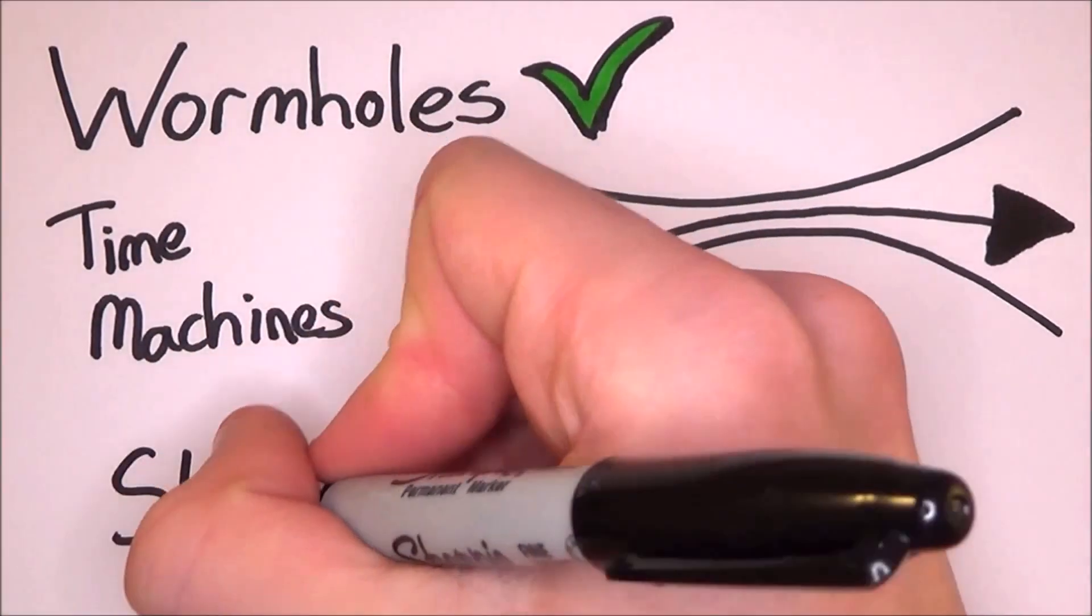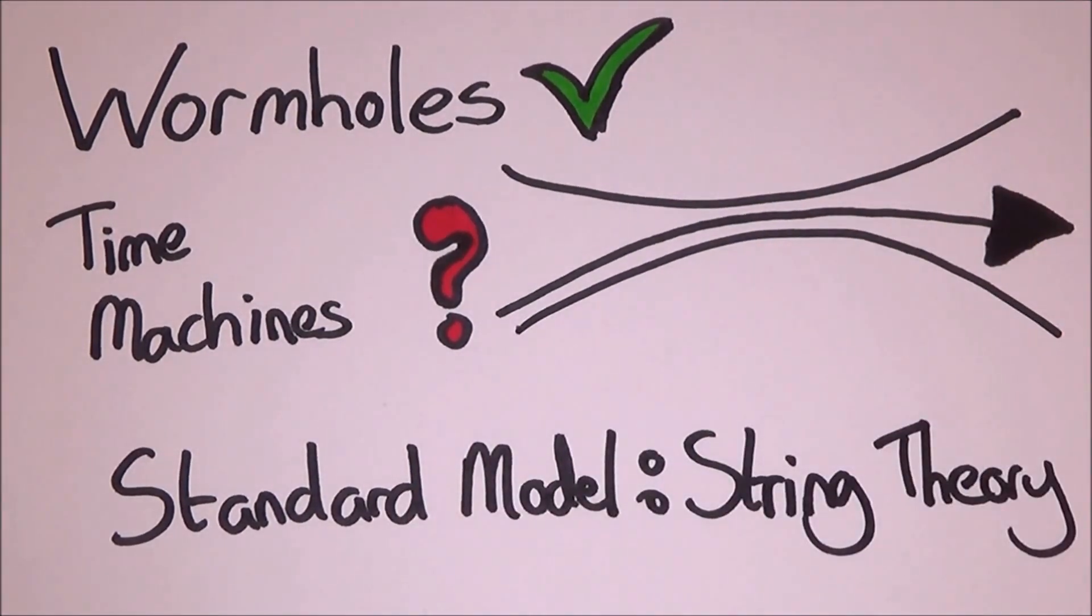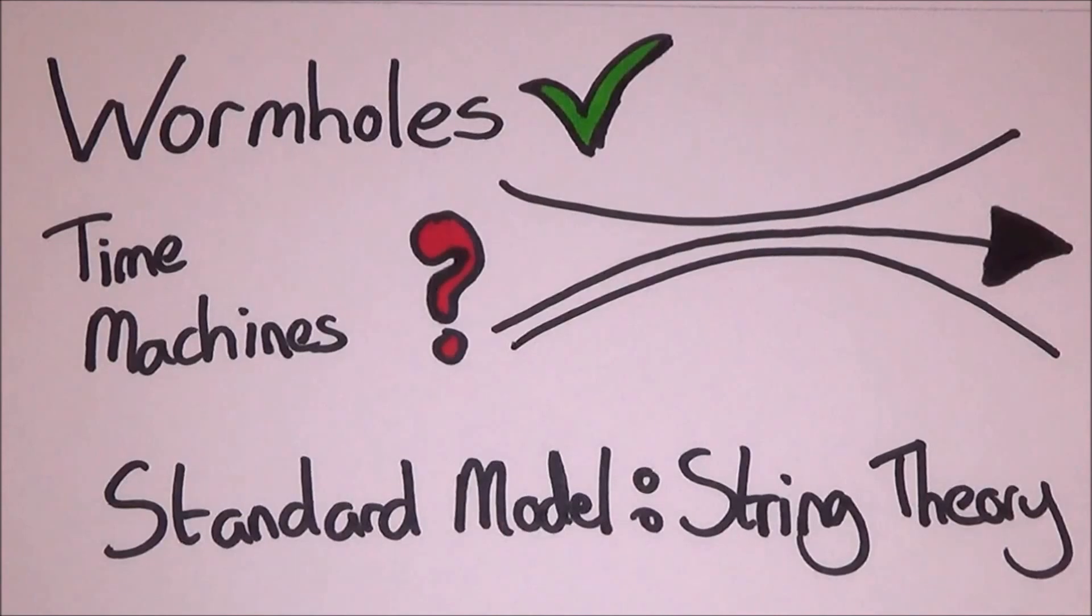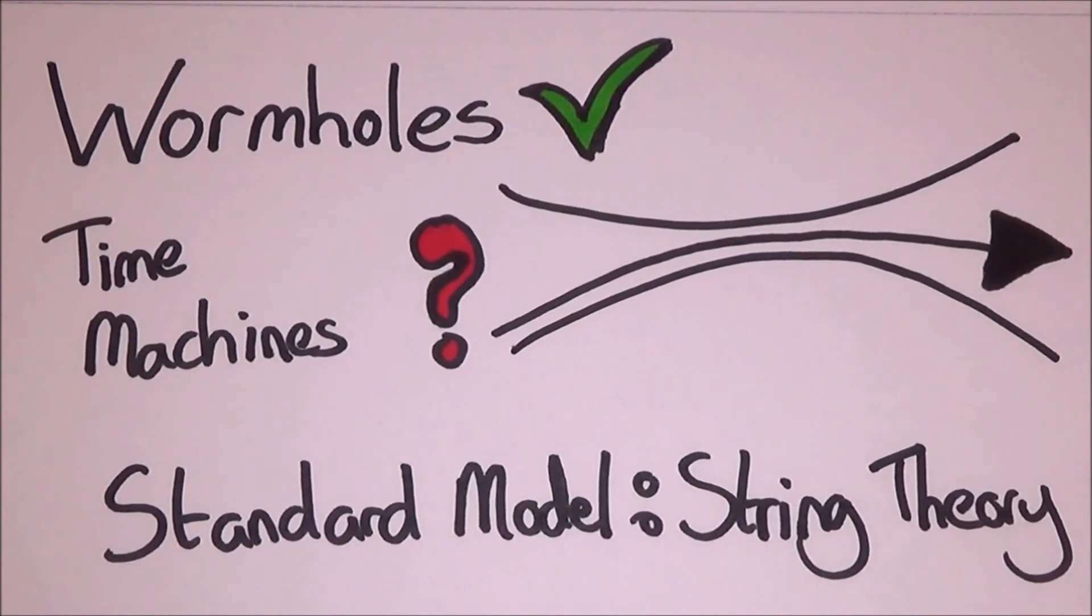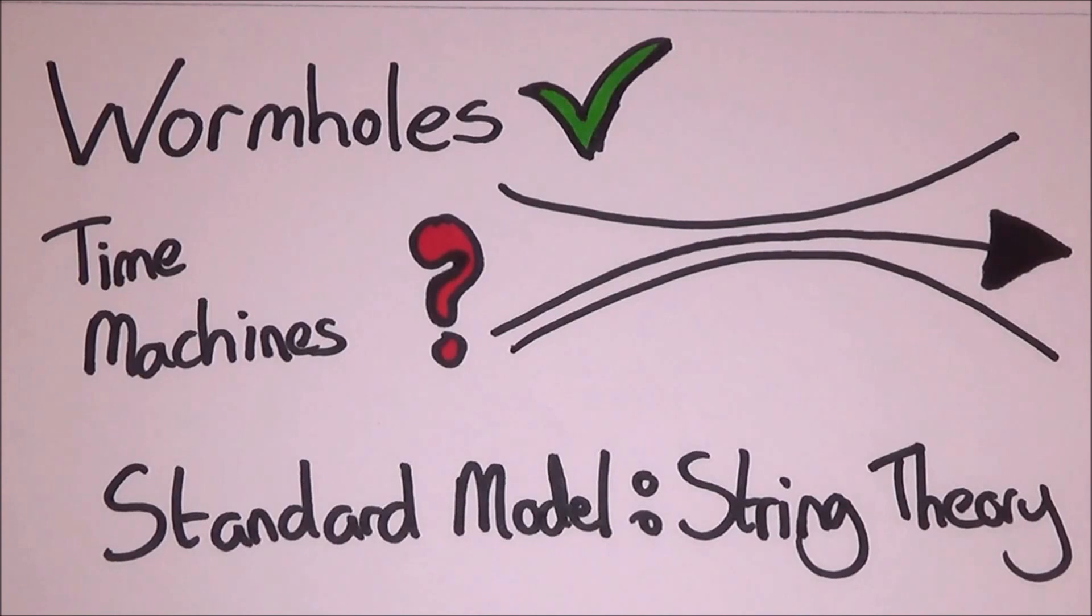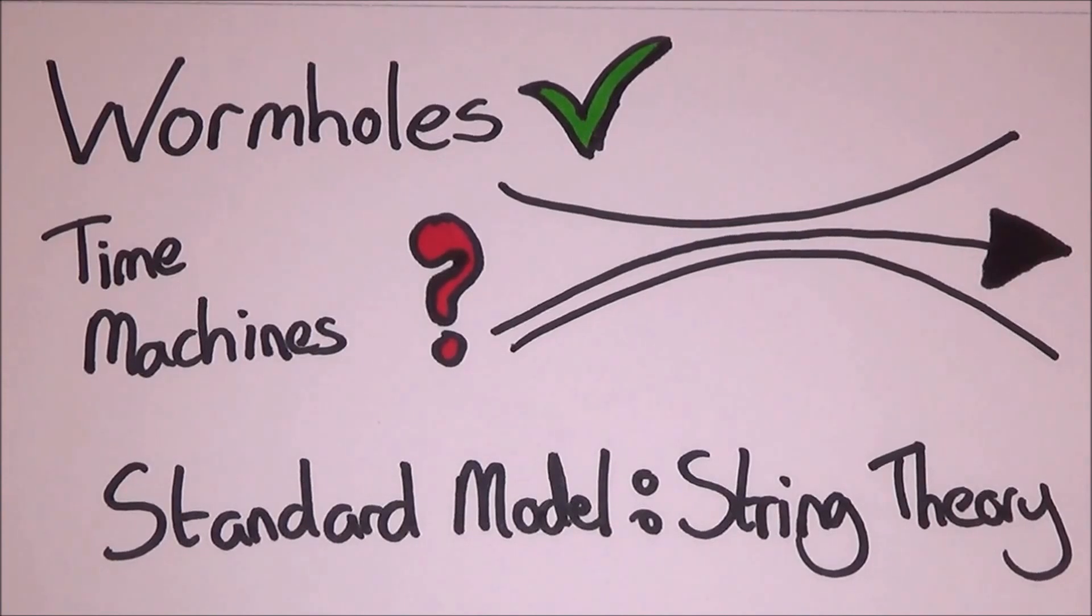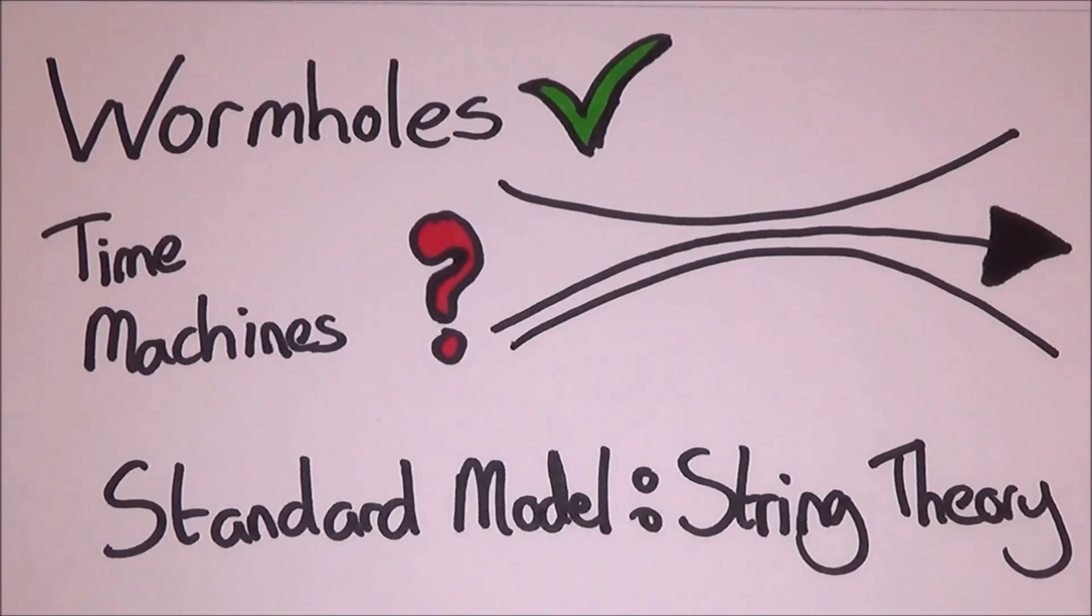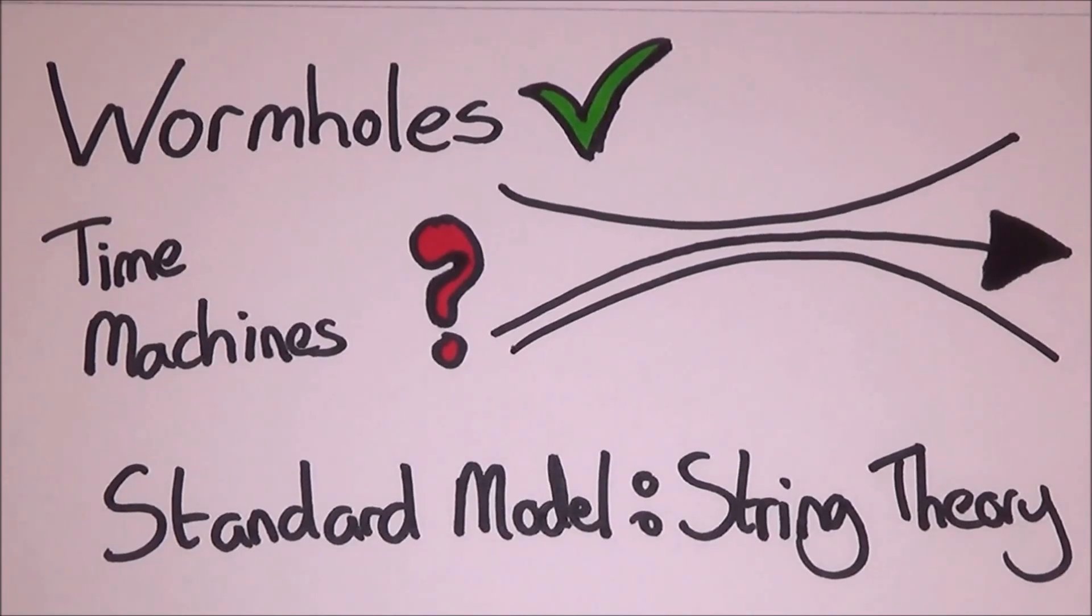String theory really is a theory of everything. Like the standard model tries to model everything, string theory does the same, but is more inclusive than the standard model. When I say everything, I literally mean everything. It also includes time. Now, time machines are allowed in Einstein's equations, as they are in string theory. However, actually making one is really difficult. It would require a lot more energy than a DeLorean from Back to the Future.